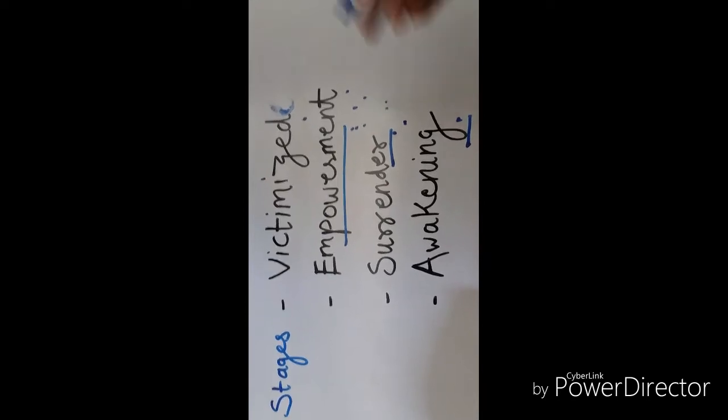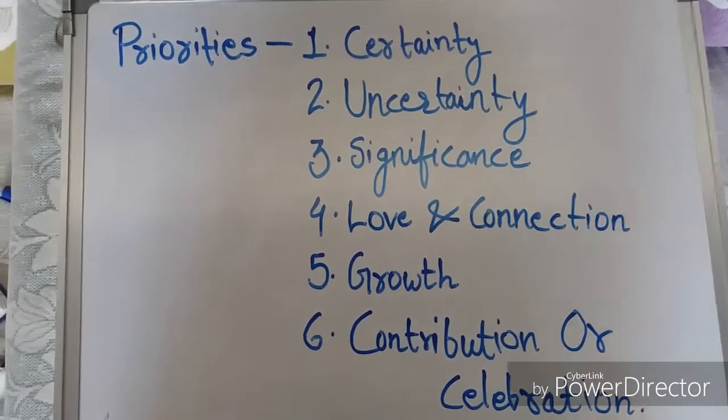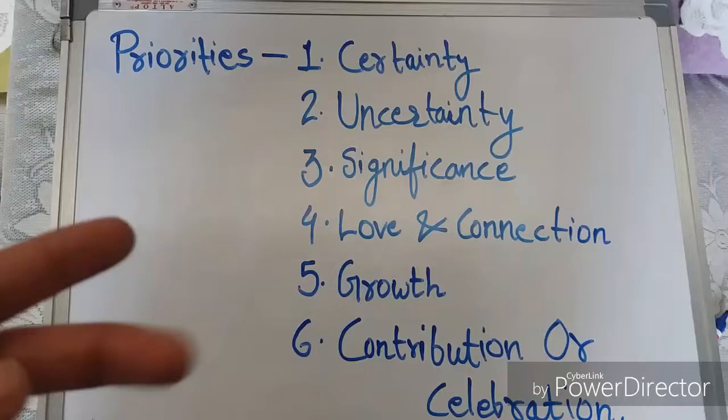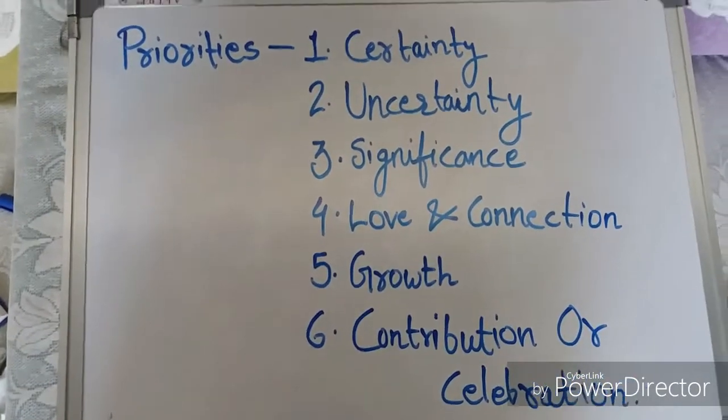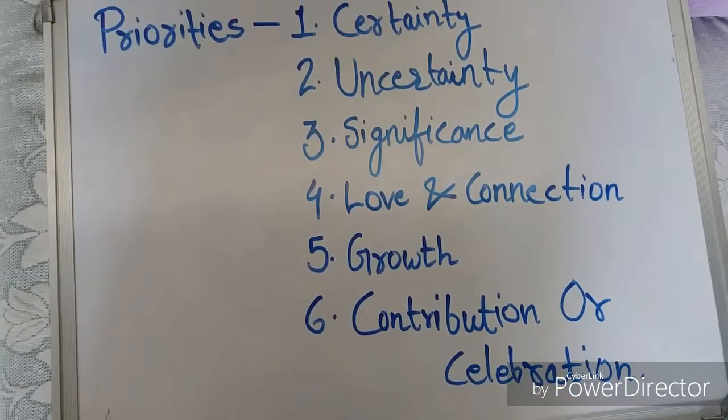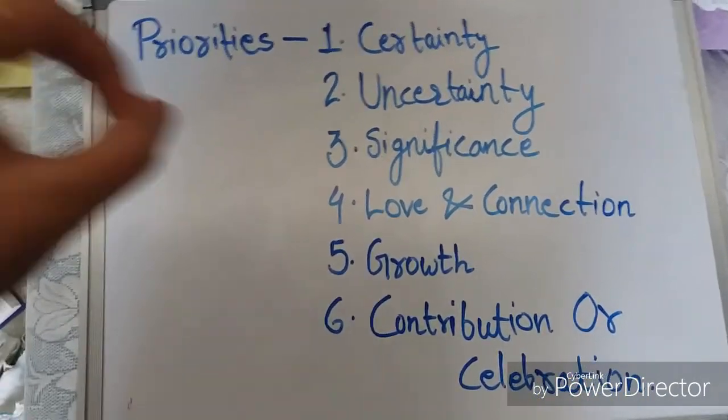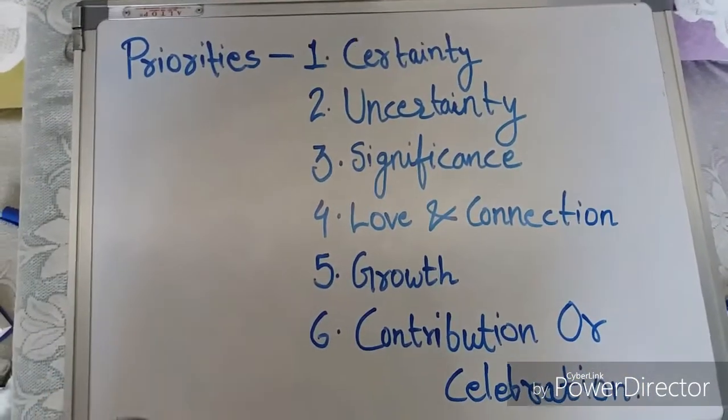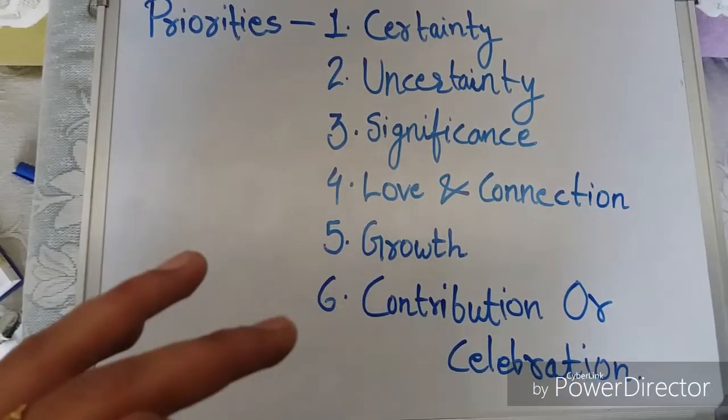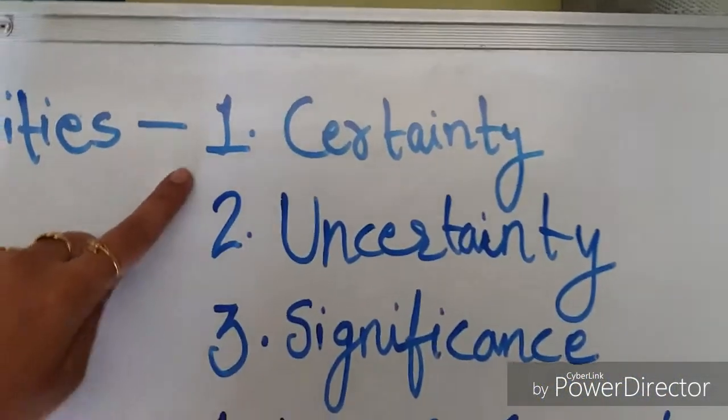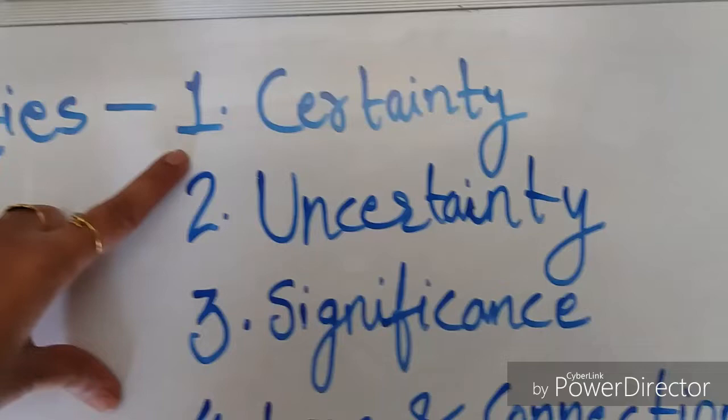To create magical relationship, if you belong to the second stage of life, that is empowerment, you take complete charge of your life. You say I create my own reality. Then you need to know this priority system so that you can create magical relationship.